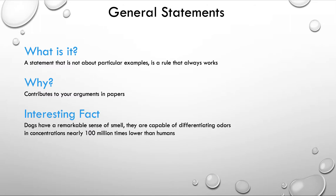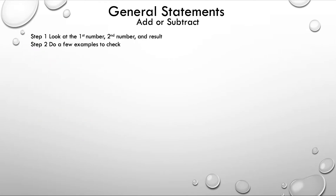Here's an interesting fact: dogs have a remarkable sense of smell. They are capable of differentiating odors in concentrations nearly 100 million times lower than humans, which means humans need a lot more of the odor around for us to be able to smell it. Now let's take a look — step one: look at the first number, second number, and result. Step two: do a few examples to check.